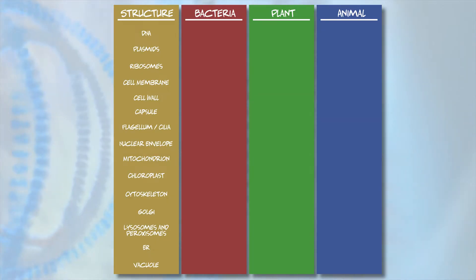Okay, now let's see what you've learned. In this chart, fill in yes, no, or sometimes to indicate whether or not the cell has that structure. For example, everyone has DNA, so you'd fill in yes for all three cell types. Now pause the video and fill in the rest of the chart on your own. When you're done, press play to see how you did.